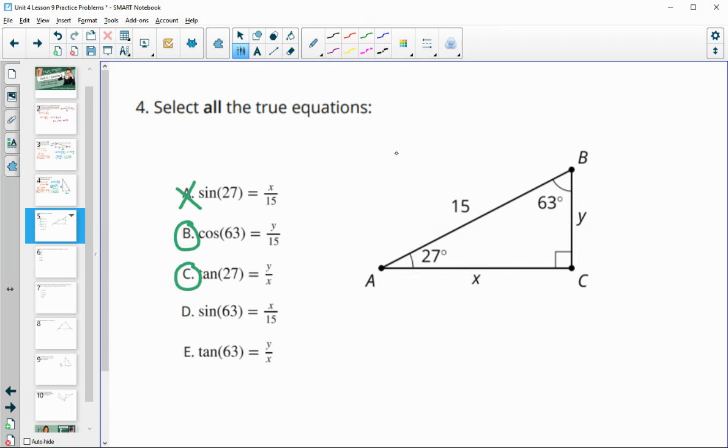D is the sine of 63. So here's 63. Opposite side would be X over hypotenuse. Sine is opposite over hypotenuse, which would be X over 15. So this one is good.